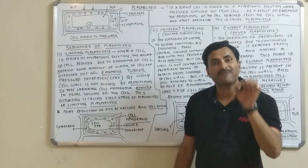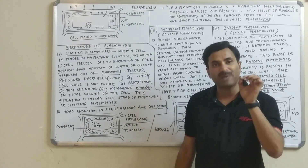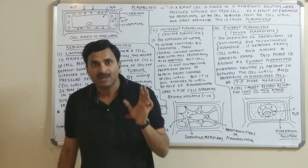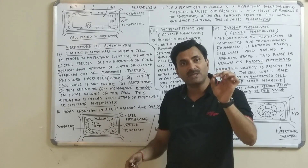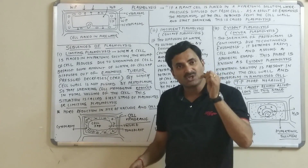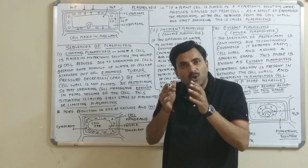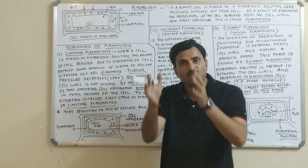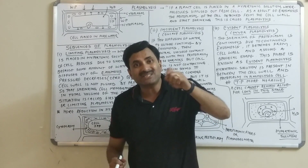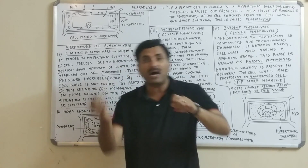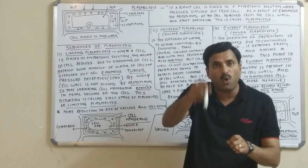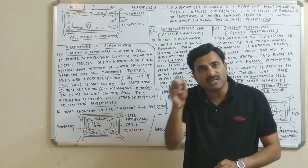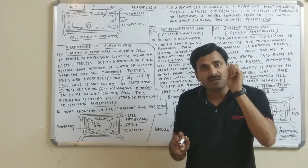Today we are going to discuss a very important concept of plant physiology known as plasmolysis. Before starting, you must know what happens when a cell is kept in pure water. When a cell is kept in pure water, water from the external medium enters the cell, the volume of the cytoplasm increases, the cell becomes turgid, and the pressure imposed by the cytoplasm on the wall is known as turgor pressure or TP. In the case of the plant cell, there is an equal and opposite pressure applied by the cell wall on the cytoplasm, called wall pressure, and TP equals WP.